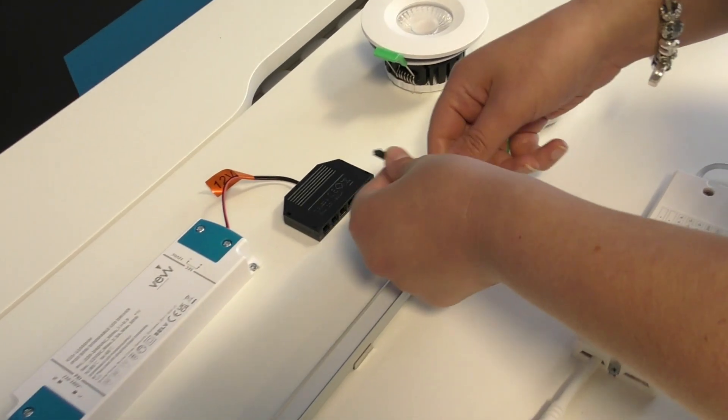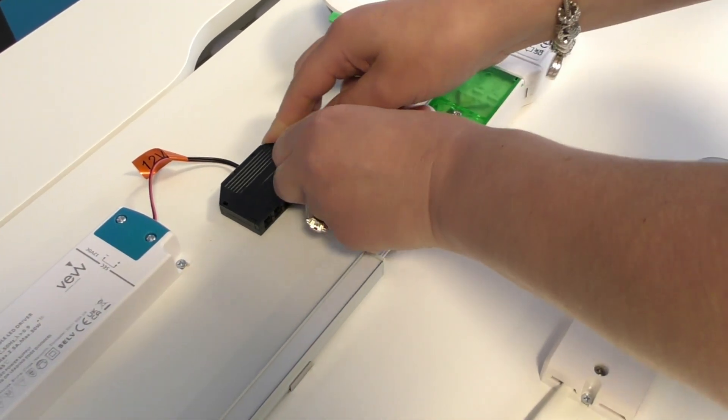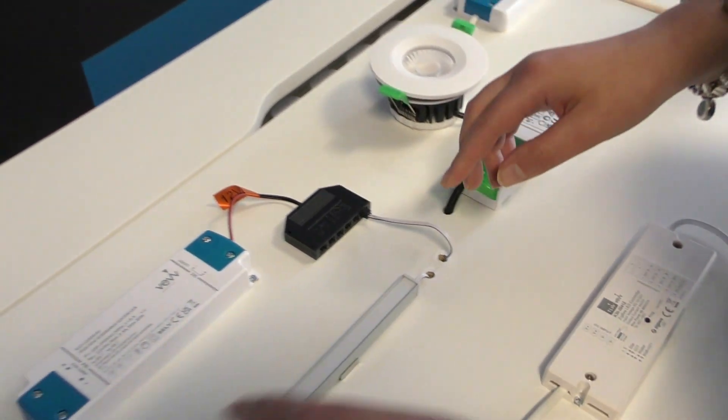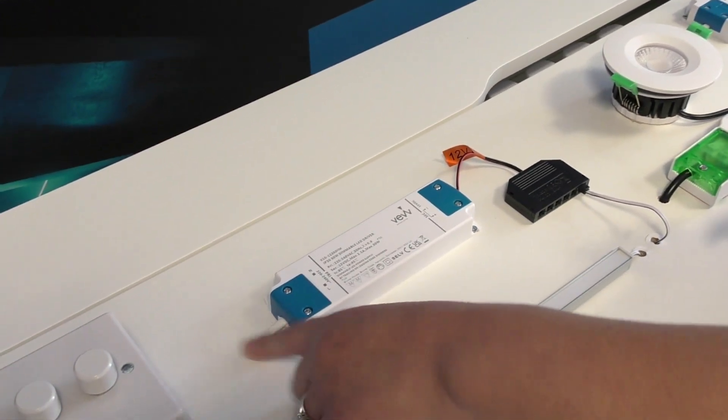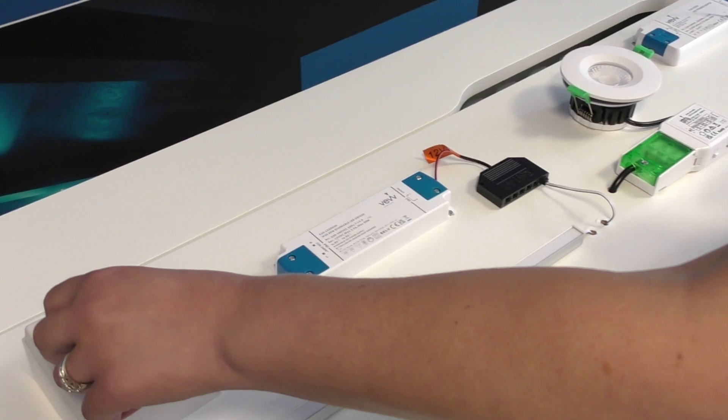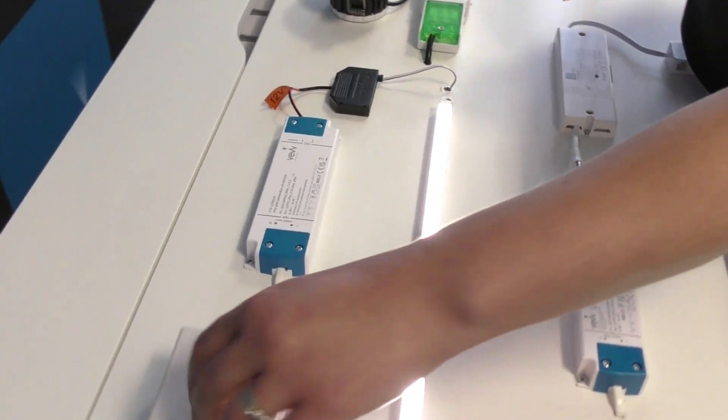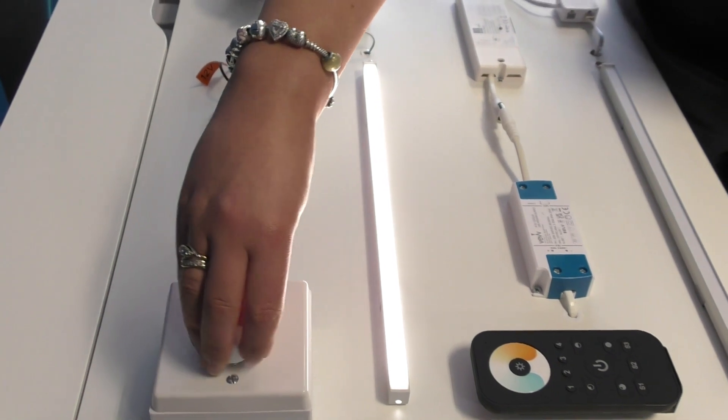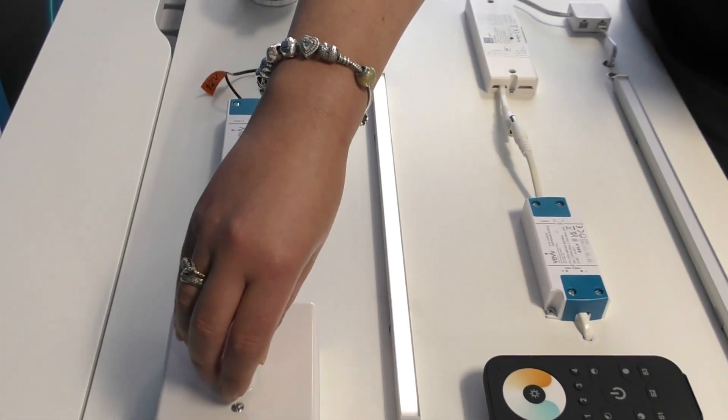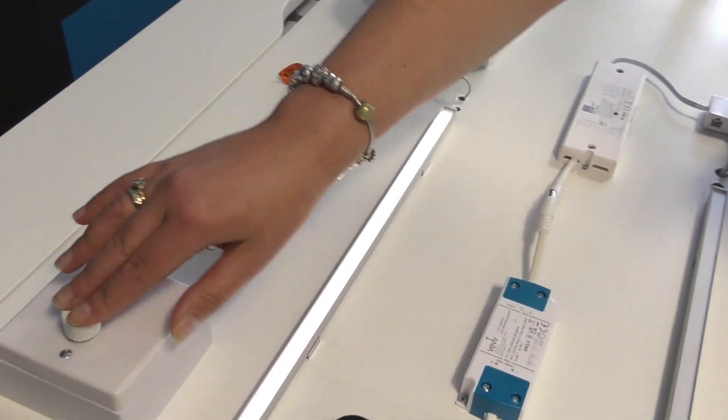With the strip lights, you plug them into the driver which is already wired up to your mains rotary dimmer switch. This allows brightness control and on/off functionality.